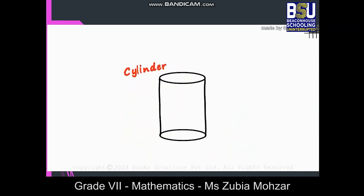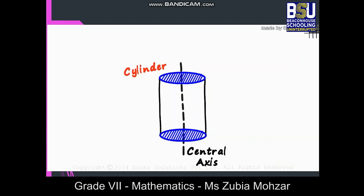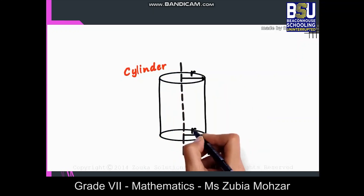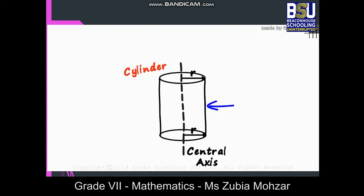Every cylinder has a central axis which passes through the centers of the two circles. The areas of the two circles are equal because the right circular cylinder has a uniform cross section. This tells us that the radii of the two circles will be equal. In a right circular cylinder, the distance between the two centers of the circles is its height. Let's call it H.